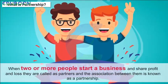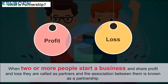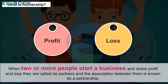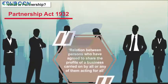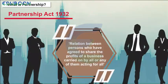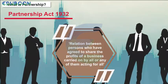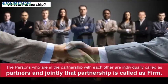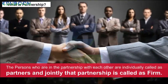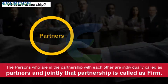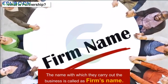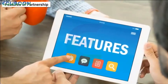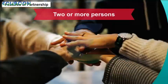Nature of Partnership. When two or more people start a business and share profit and loss, they are called as partners, and the association between them is known as a partnership. The Partnership Act 1932 defines partnership as the relation between persons who have agreed to share the profits of a business carried on by all or any of them acting for all. The persons in the partnership are individually called partners, and jointly that partnership is called a firm. The name under which they carry out the business is called the firm's name.